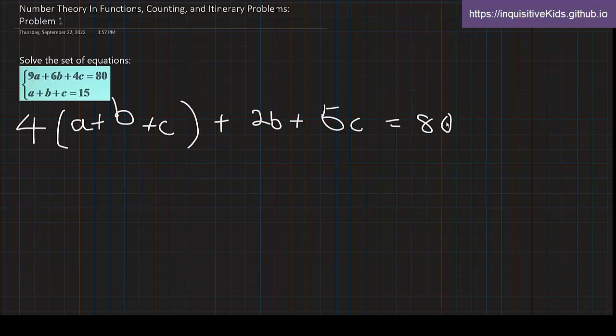So because we know that a plus b plus c is equal to 15, we can substitute that as a plus b plus c. Multiply that with 4 and we get 60. So we can rewrite it as 2b plus 5c is equal to 80 minus 60, which is 20.